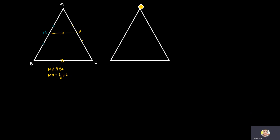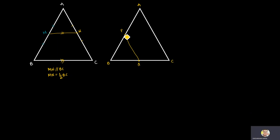Suppose I have a triangle ABC. Let's take the same triangle ABC with another two sides. AB has midpoint P and BC has midpoint Q. Then this line PQ is half of AC and PQ is parallel to AC.